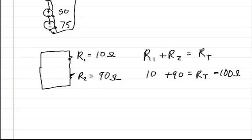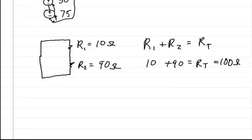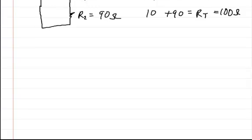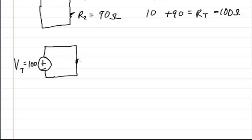So now since I have the total resistance and the total voltage, I'm going to redraw my circuit like this. So here is the power supply that I have, plus minus, this is my total voltage which is equal to 100 volts. And I'm going to connect it to my resistor which is the total resistance of the circuit. RT and that's equal to 100 ohms.